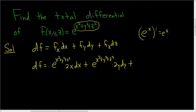Plus the partial derivative with respect to z. Again, because the derivative of e to the x is e to the x, we get e to the x squared plus y squared plus z squared, times the derivative of the inside piece with respect to z. Since we're differentiating with respect to z, x and y are constant, so their derivatives are zero. We just get the derivative of z squared, which is 2z, dz.